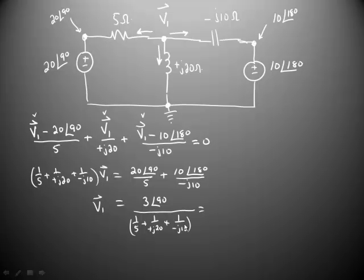If we do the arithmetic on the denominator, we should end up with 3 at angle 90 divided by, and I'm going to do a little bit of rounding here, 0.206 at angle 14.03 degrees.